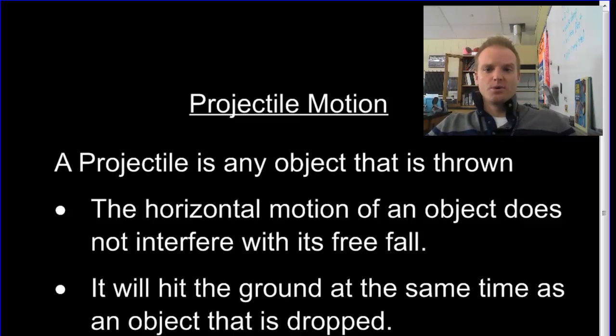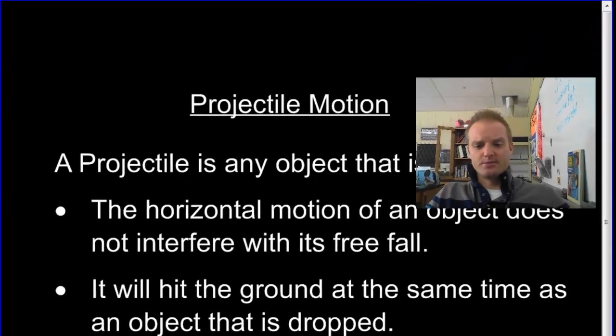And so when you put things in orbit, it's a projectile that's constantly falling toward Earth, but it's moving so fast it never actually hits Earth. I know it's kind of an abstract idea. We'll talk more about it in class. But that's the idea of this projectile and projectile motion.